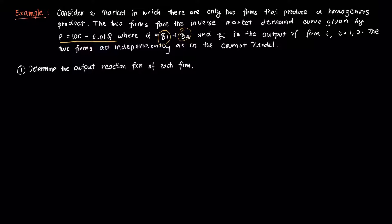Let's also assume that the cost functions of the firms are C1 = 40Q1 and C2 = 40Q2 — a similar cost structure between the two firms — and we assume that these two firms act independently in this particular model.